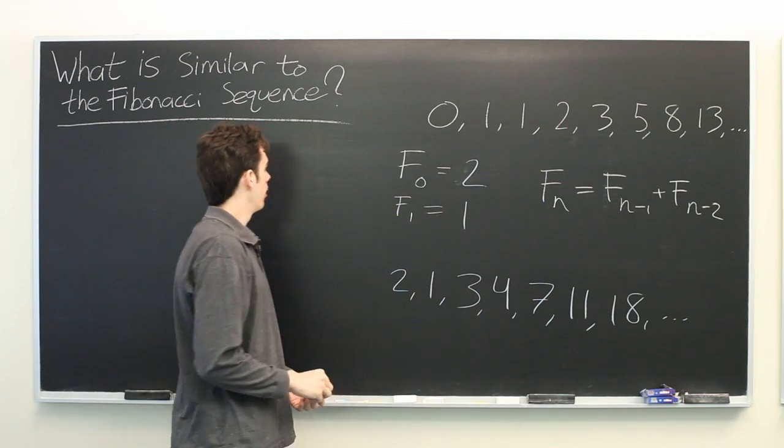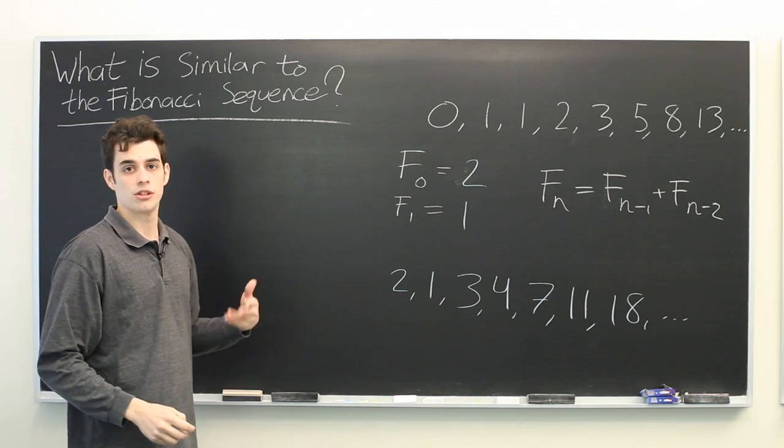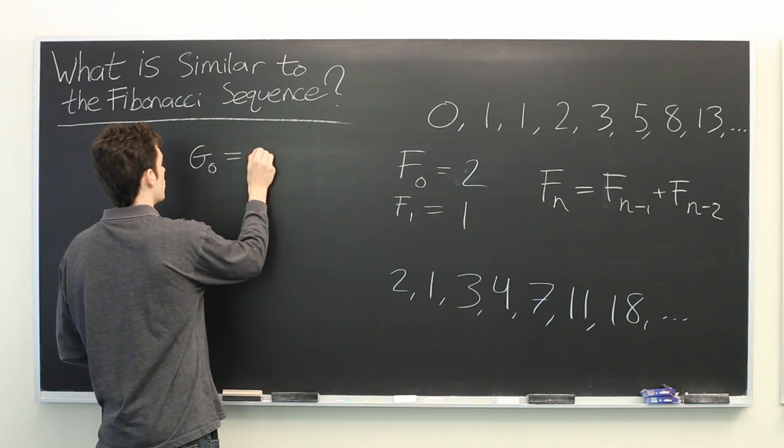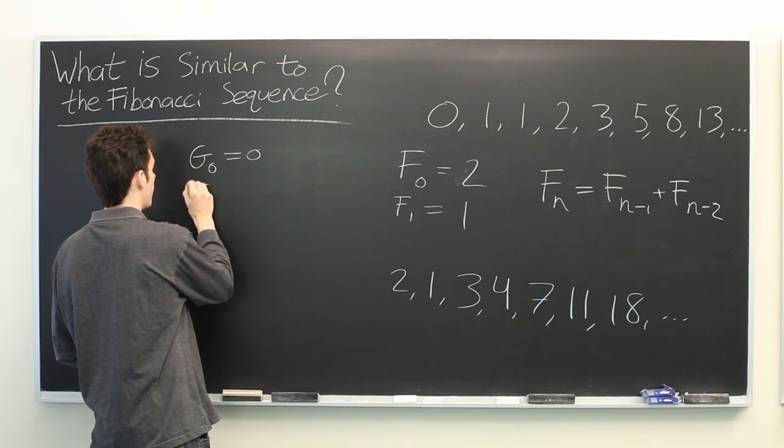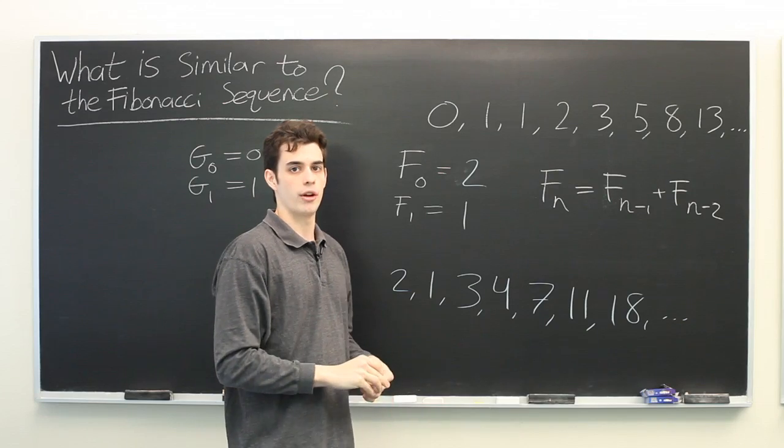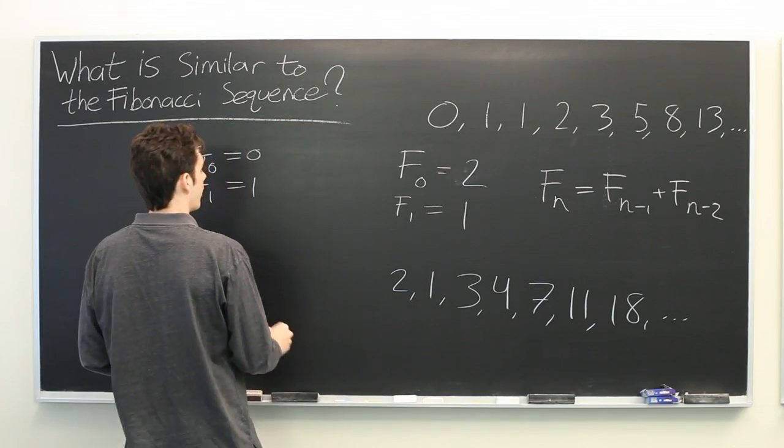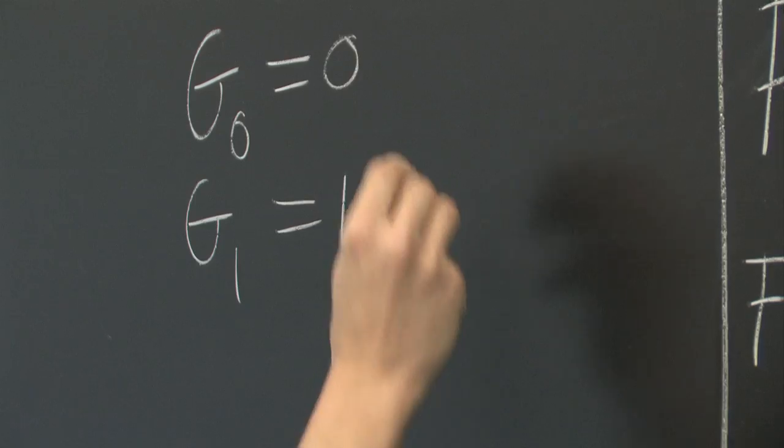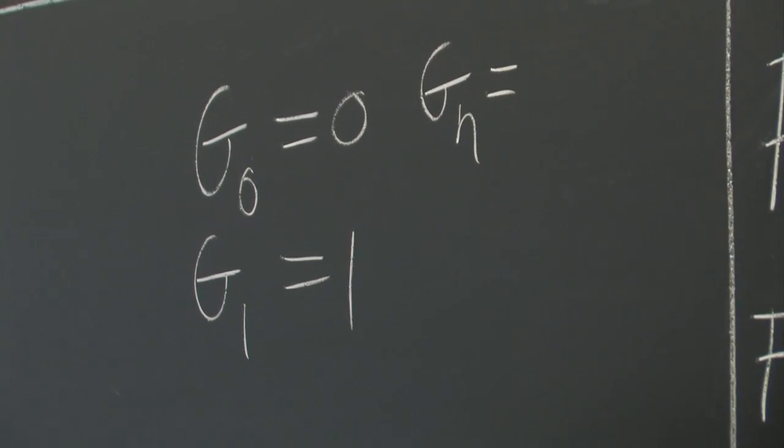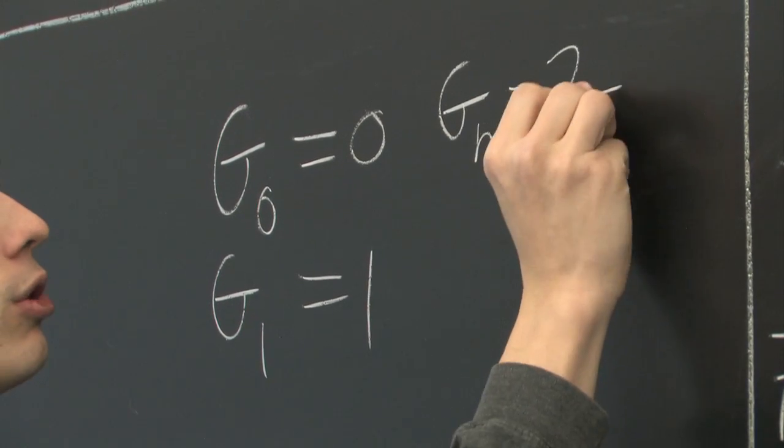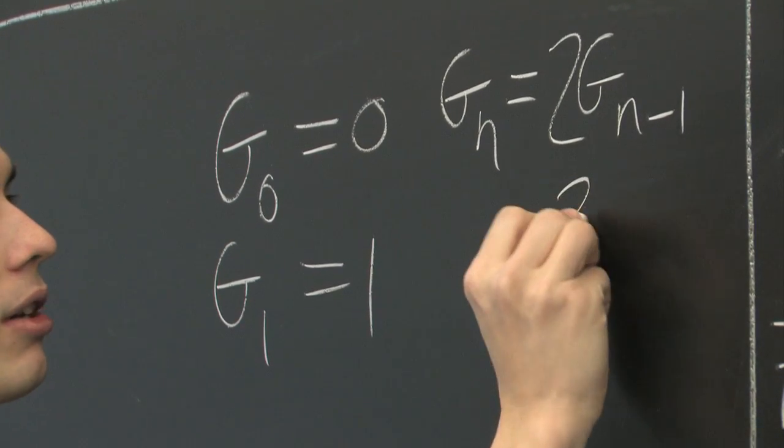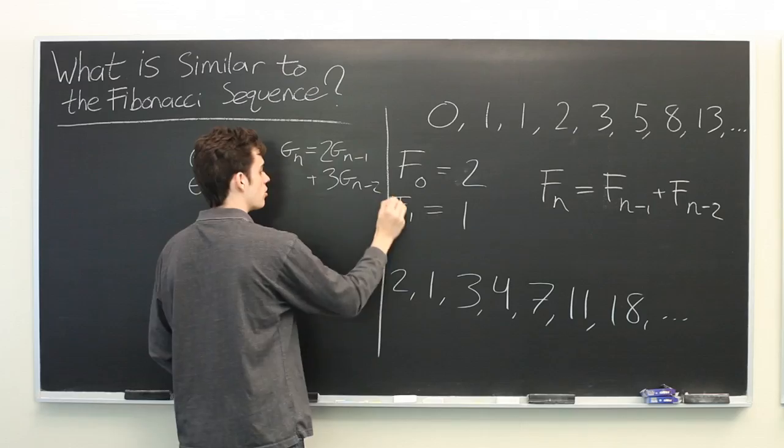Another example, let's take the same initial conditions that we had before. Say G0 is equal to 0 and G1 is equal to 1. But now, let's change our recursive definition. We'll say that Gn is given by 2 times Gn-1 plus 3 times Gn-2.